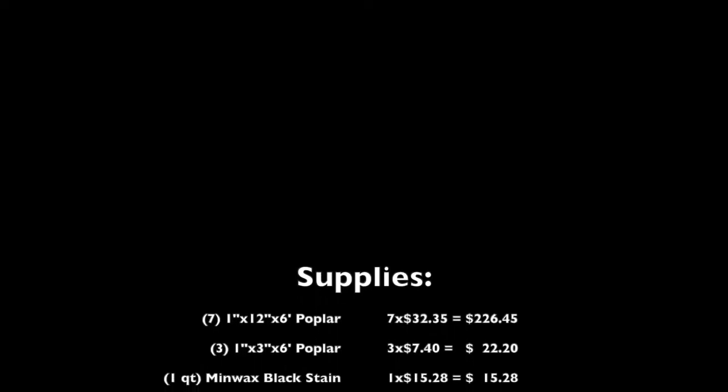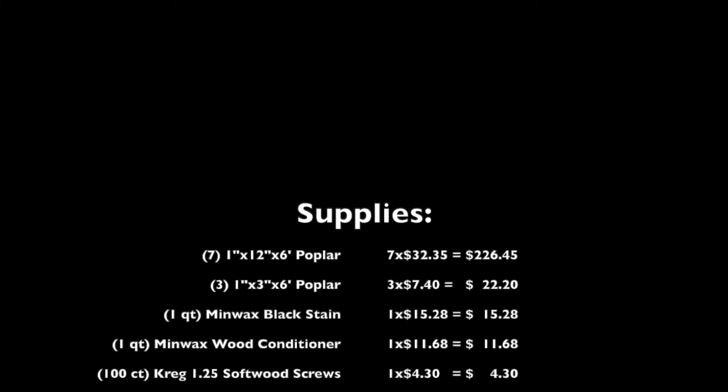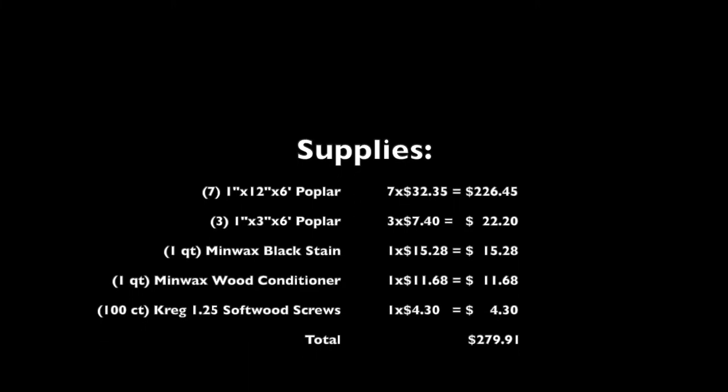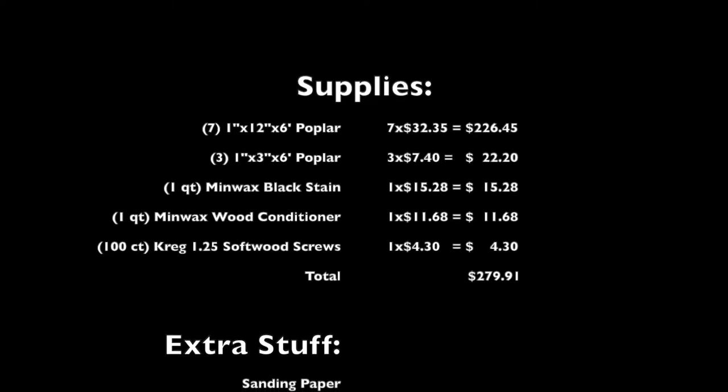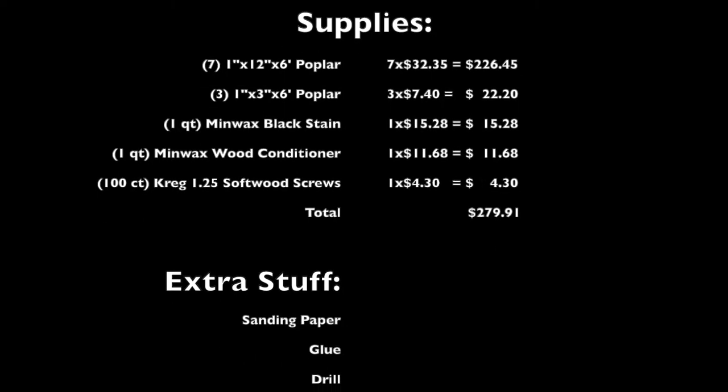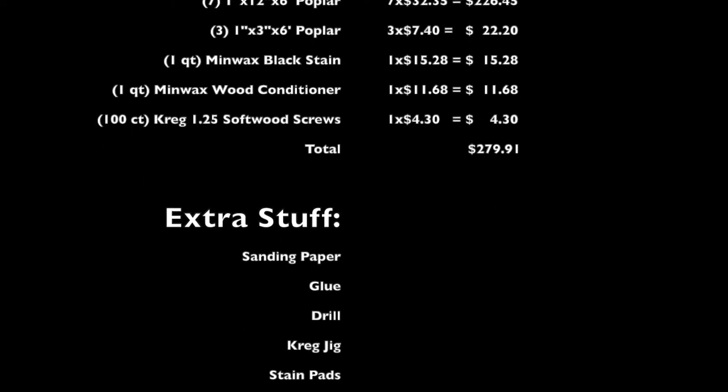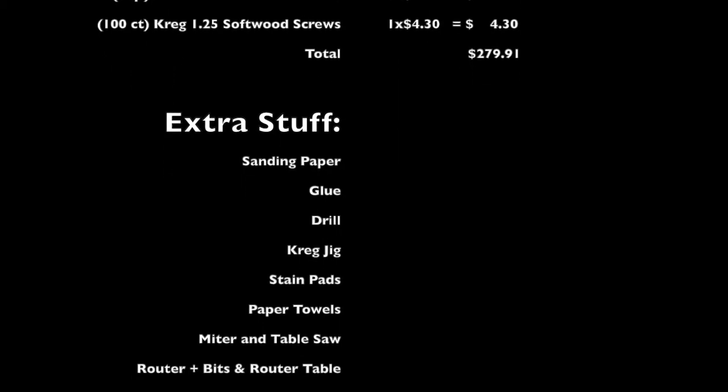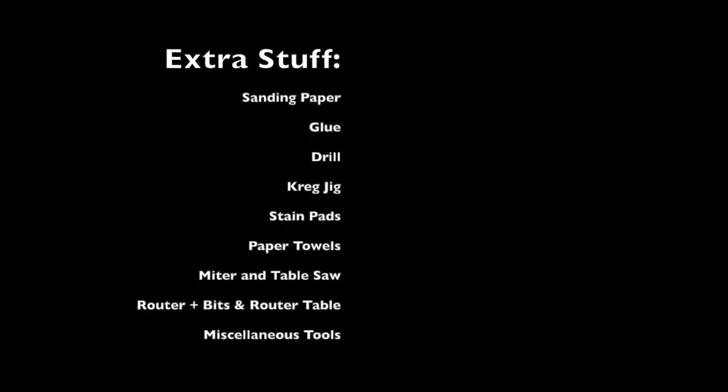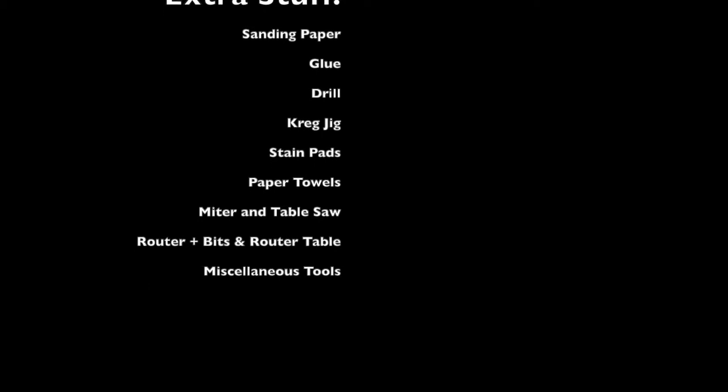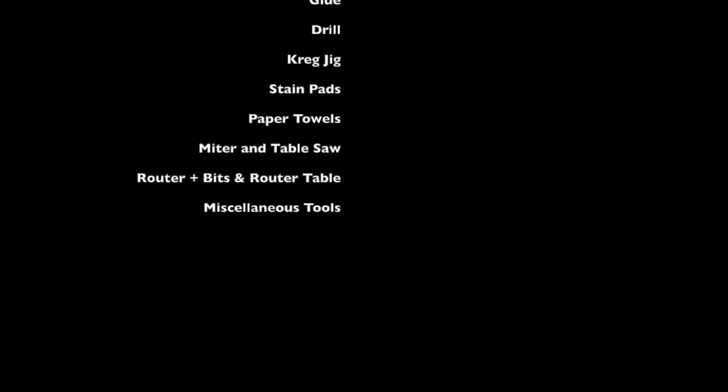Before we begin, let's run down the supplies that I needed for this entertainment console. There was some 1x12x6 planks of poplar, some 1x3x16 poplar, the black stain, the wood conditioner, the screws, all for a total of $280. A few extra things that I needed: paper, glue, drill, Kreg jigs, staining pads, paper towels, table saw, and miter saw, and some miscellaneous tools.